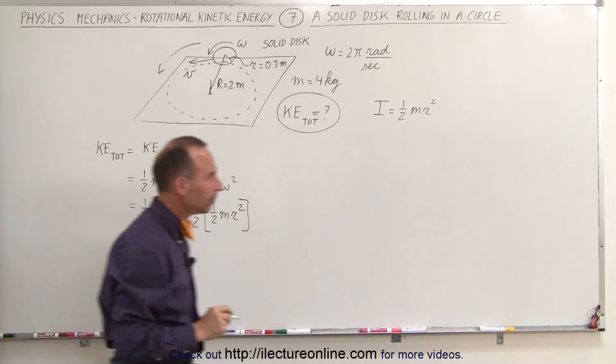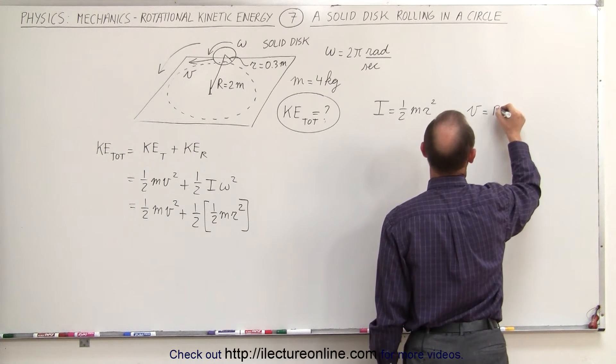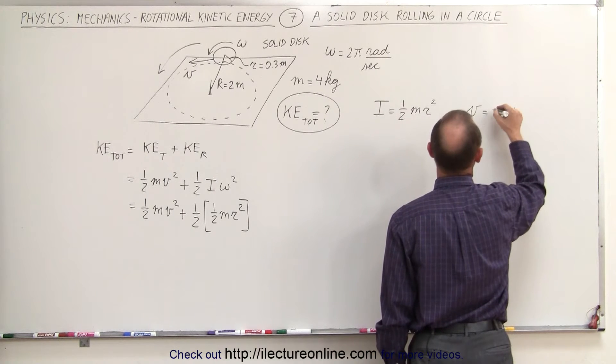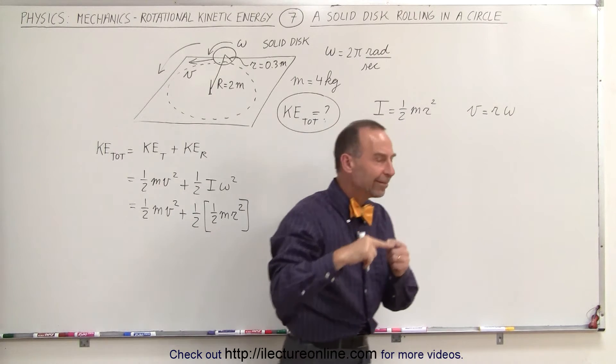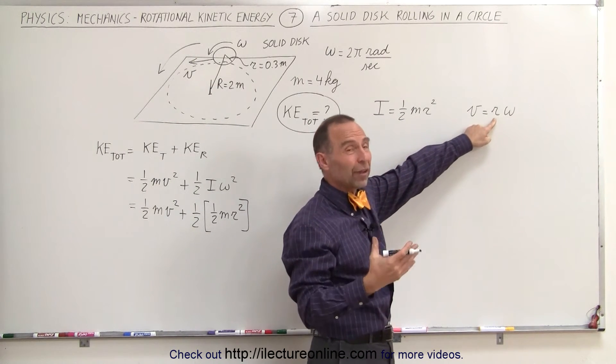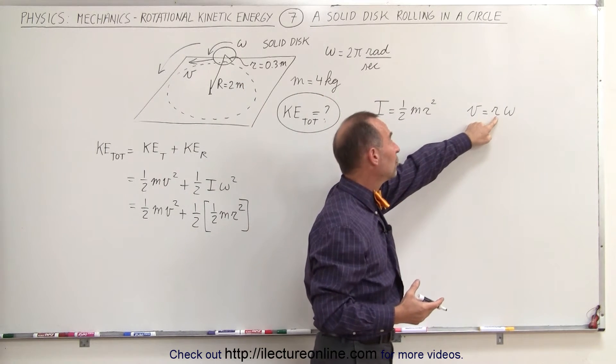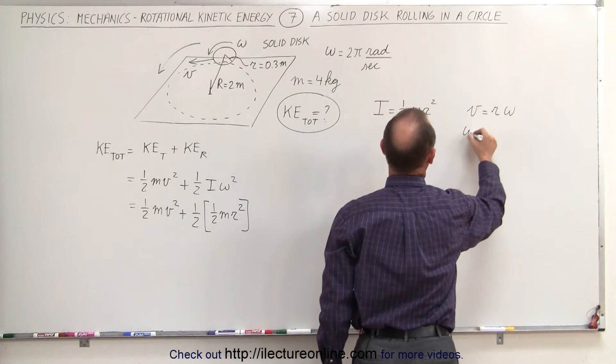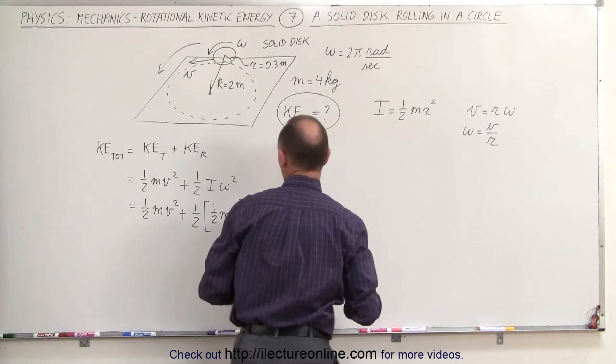Now, what about omega? We know that the tangential velocity is equal to the radius times omega. Now, again here, this would have to be small r, because I'm talking about the angular velocity of the disk related to the velocity of the disk, and so the tangential velocity of the disk will be the same as the velocity of the disk, and therefore we use r, the radius of the disk. That means that omega can be written as v divided by small r, which can go in here.